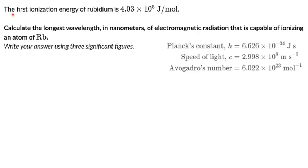The question is: the first ionization energy of rubidium is 4.03 × 10^5 joules per mole. Calculate the longest wavelength in nanometers of electromagnetic radiation that is capable of ionizing an atom of rubidium.